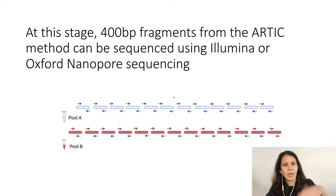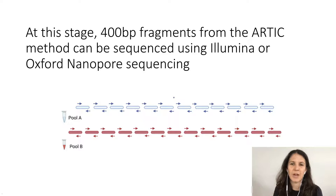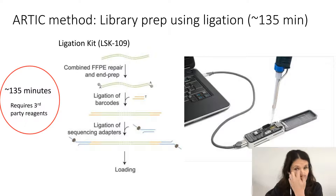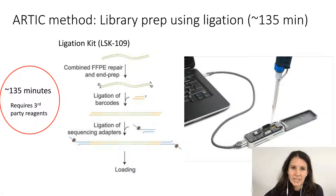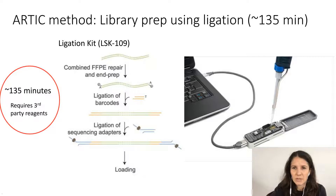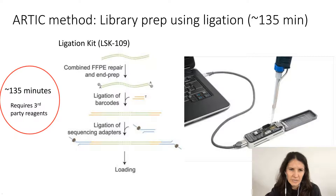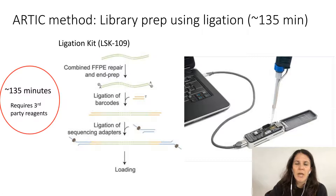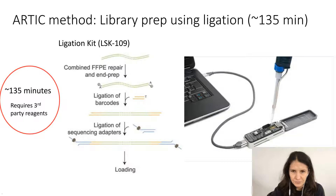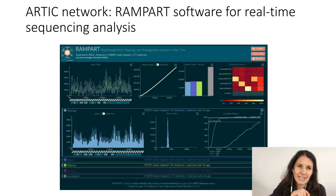Coming back to the ARTIC method where you have your SARS-CoV-2 genome amplified in 400 base pair fragments — in this case using nanopore sequencing — the ARTIC method uses a ligation kit from Oxford Nanopore. The process of ligating barcodes and sequencing adapters to put your DNA onto the MinION takes around 135 minutes and requires some pretty expensive third-party reagents. This is fine for experienced users, but it is a little difficult for people who aren't very experienced. This is one of the changes we've made in our method.